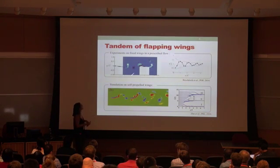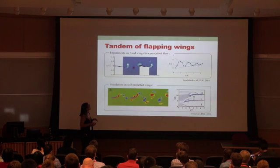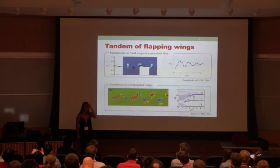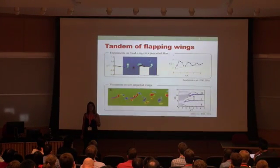Here you have two swimmers that are fixed at a prescribed distance in an incoming flow. What they saw is depending on the timing of arrival of the vortices on that second wing, you're going to have destructive or constructive interference. And so you're going to have an enhanced or decreased thrust.